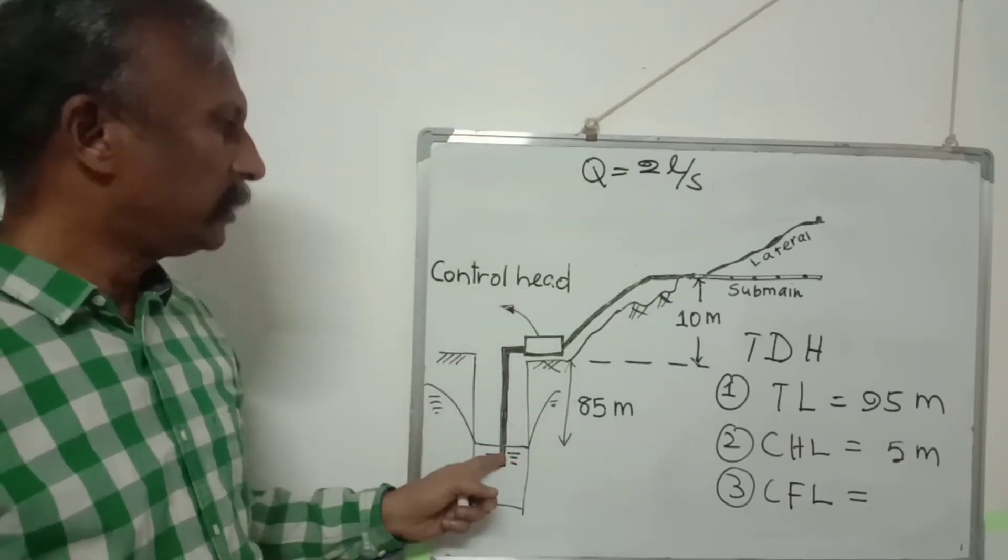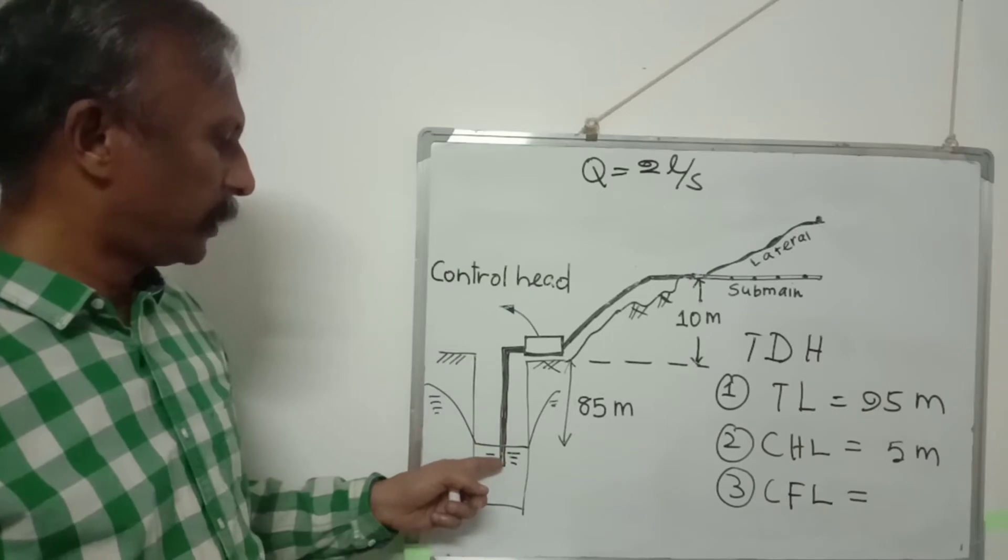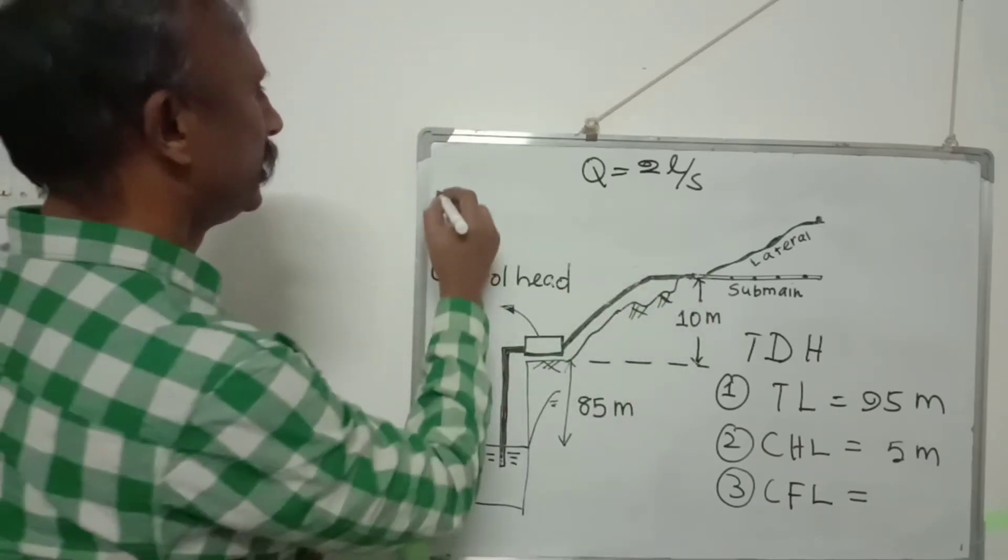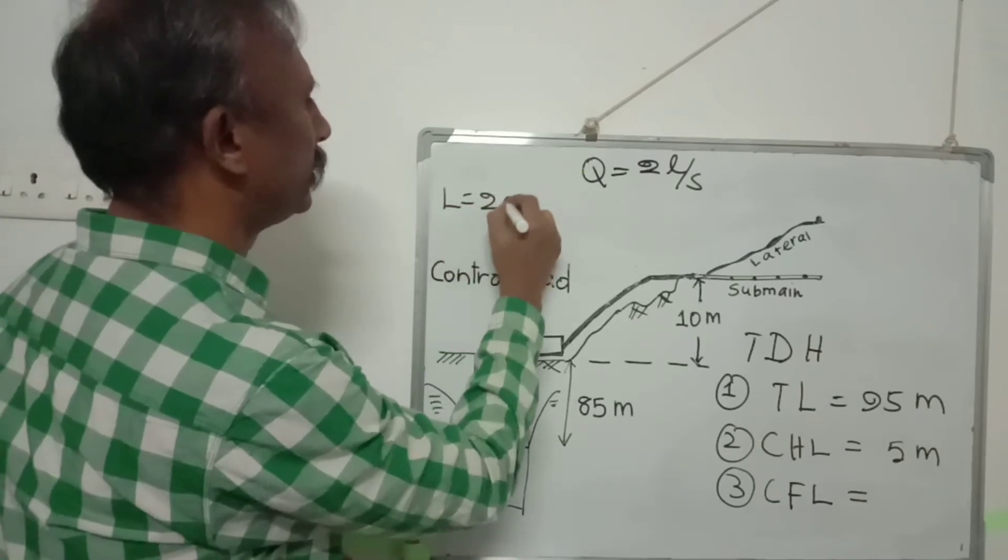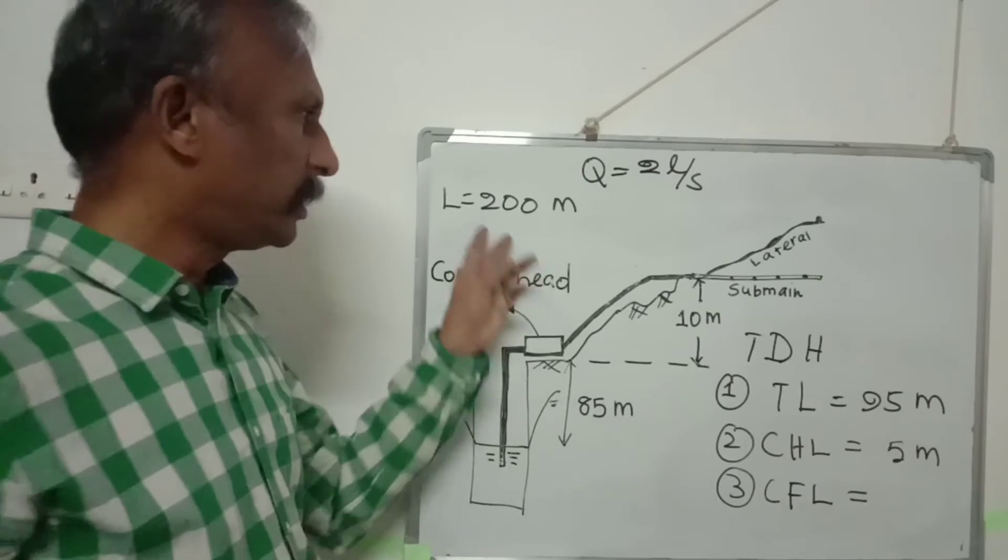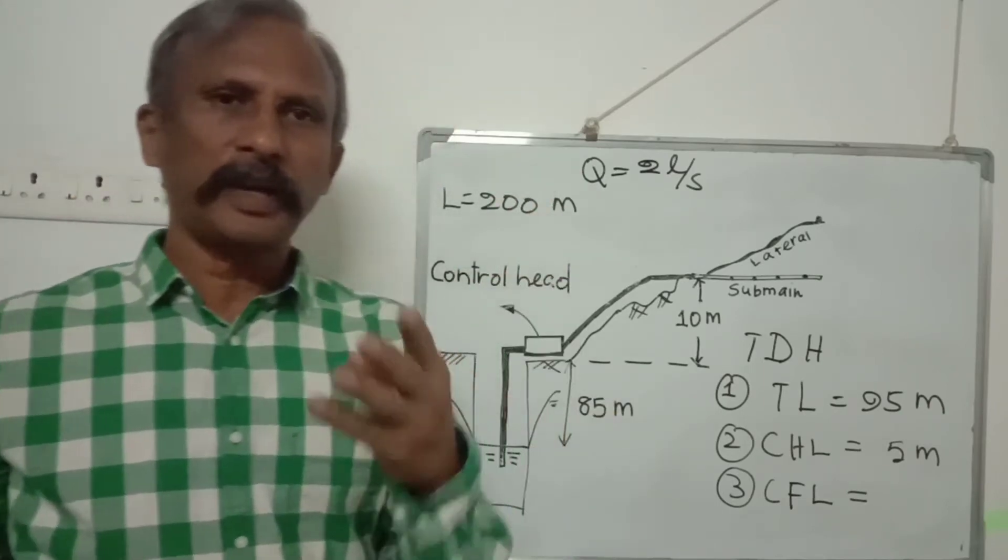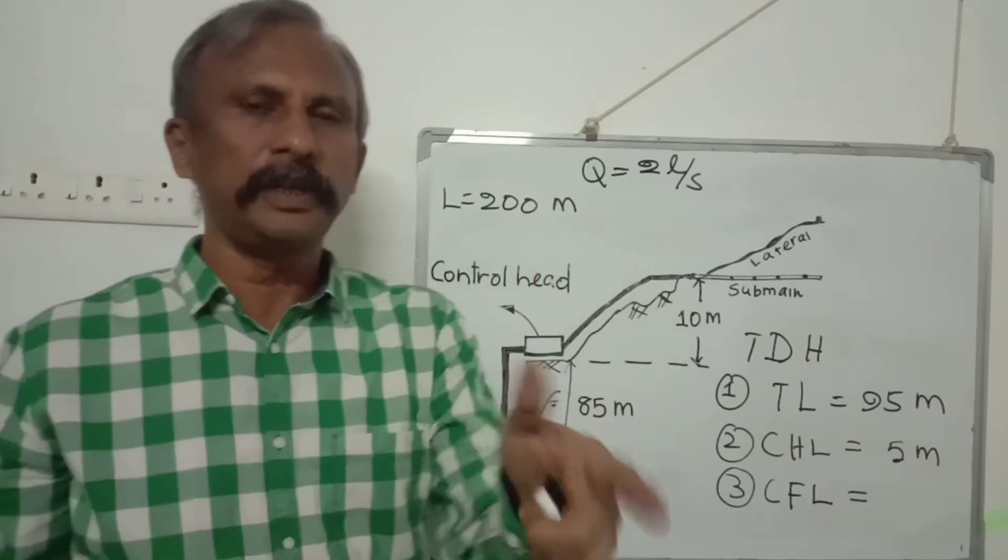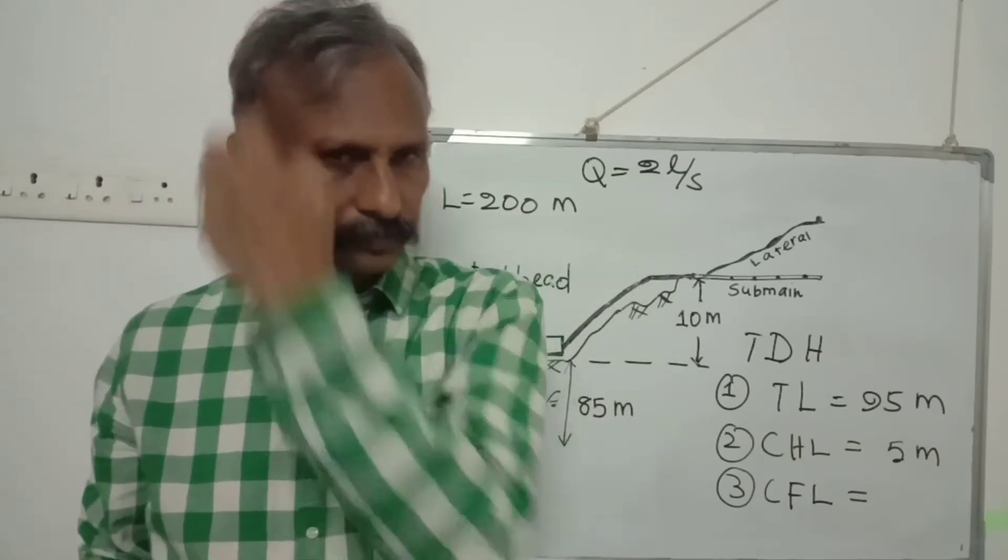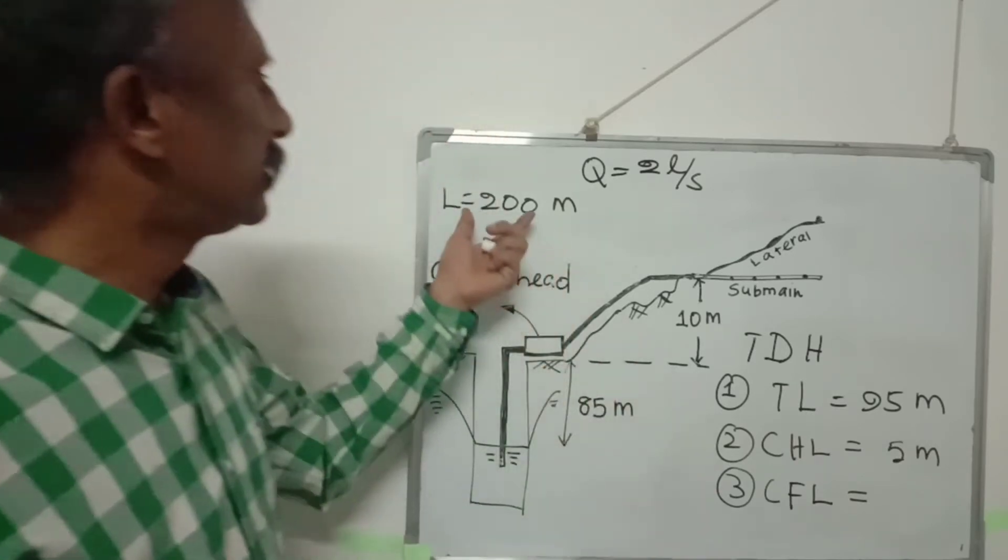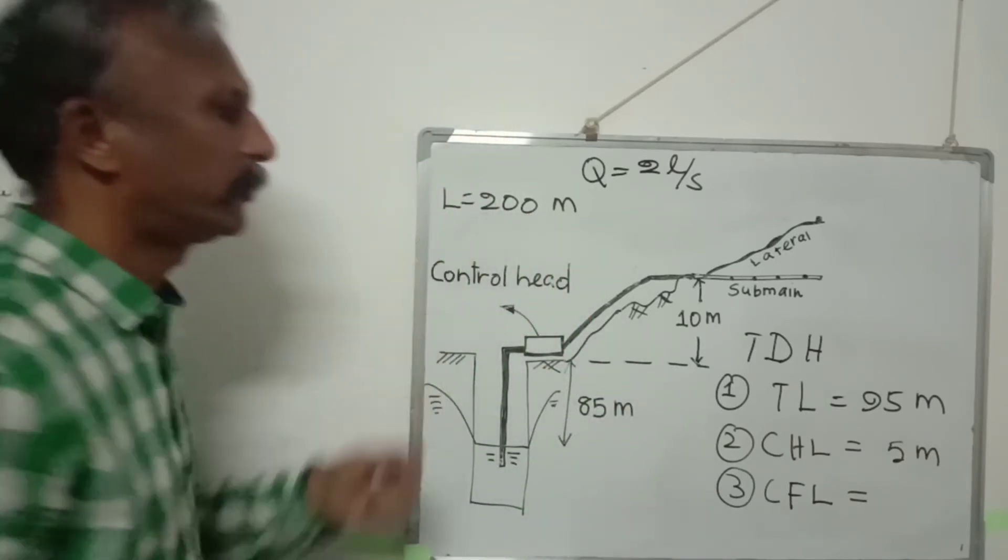For that we need total length of the pipe from foot valve to the start of the submain. Let us assume that in this case it is 200 meters. It is customary to take 5% to 15% of total length of the pipe to be the conveyance friction loss. Let us assume 10%. 10% of 200 meters is 20 meters.